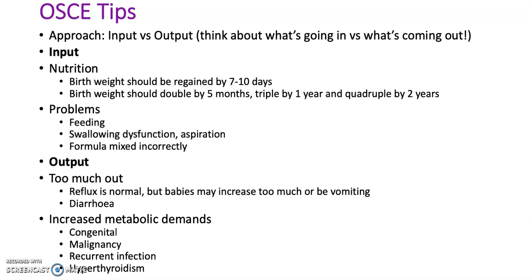For output: reflux is normal but babies may vomit too much. Consider diarrhoea and increased metabolic demands. Are there any congenital malformations or problems? Consider malignancy, recurrent infections, or hypothyroidism.